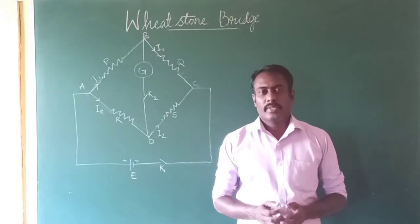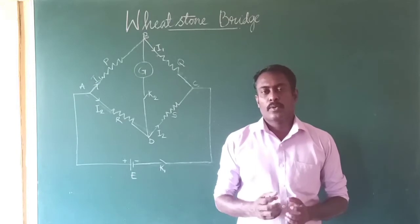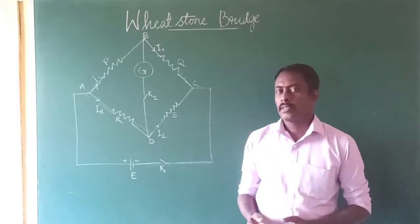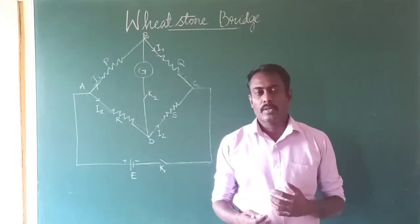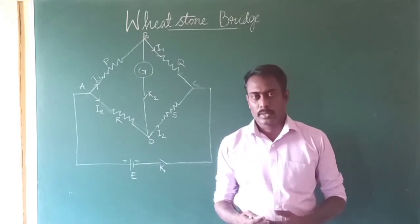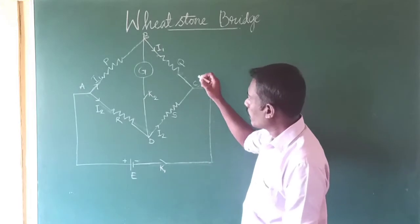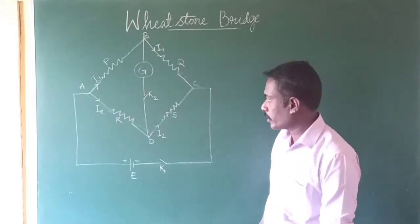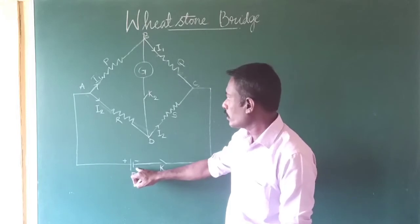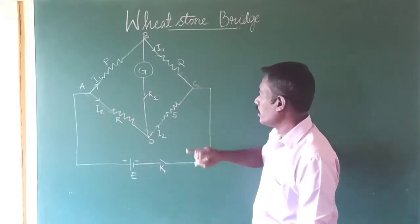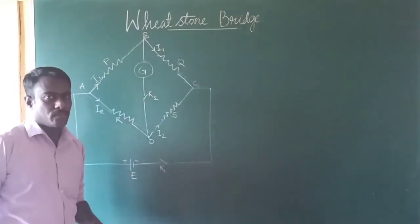Good morning children. Today we are going to learn about Wheatstone Bridge. It is an arrangement of four resistors connected as a bridge. This arrangement is normally used to find out an unknown resistance which is connected to the circuit when the other three resistors are known. In this diagram you can see that there are four resistors P, Q, R and S are connected, and a battery is also connected. This arrangement is known as a Wheatstone Bridge.